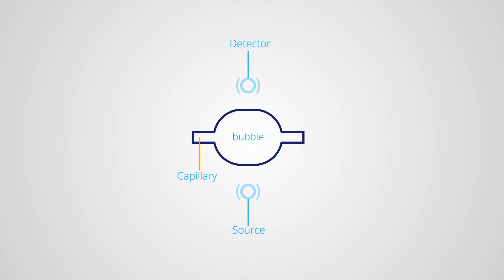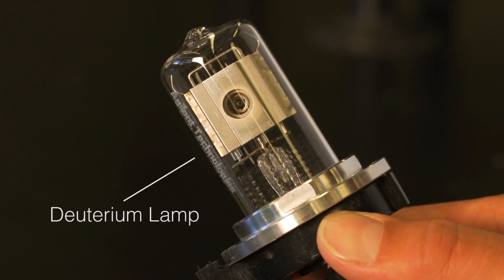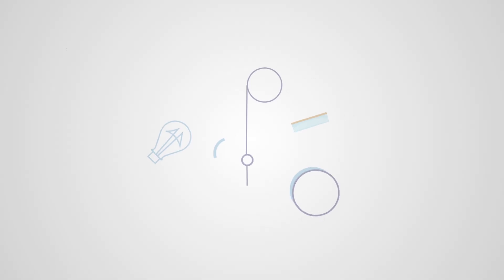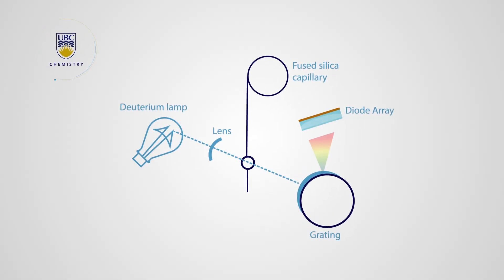However, the trade-off for better sensitivity is the loss of peak resolution. The detector here is a UV-Vis diode array detector, which uses a deuterium lamp. Our video about experiment 4 provides more detail on this kind of diode array detector.